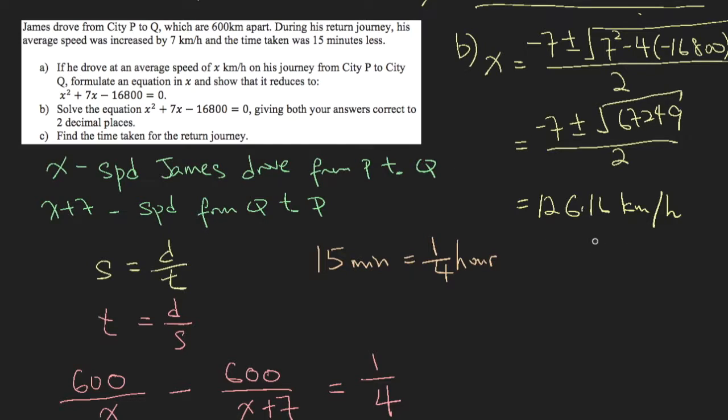The other one is a negative value which is impossible in a physical world. You can't have a negative speed in this case. So it is an inadmissible number.